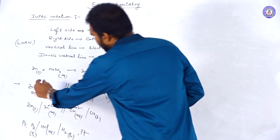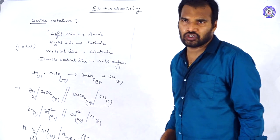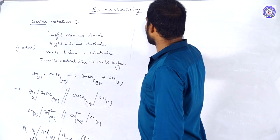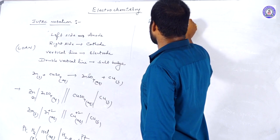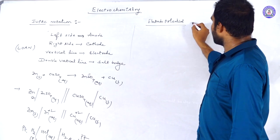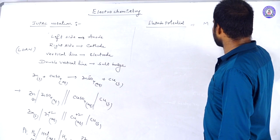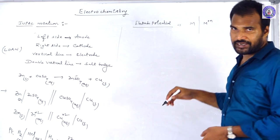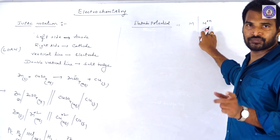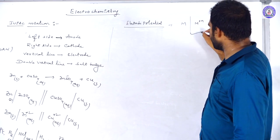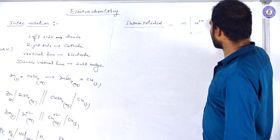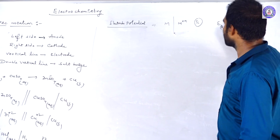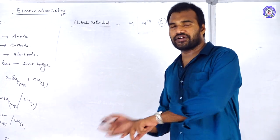Whenever a metal is in contact with its metallic aqueous solution — represented by a single vertical line — a potential is generated. That potential we call electrode potential. The electrode potential is represented as E, and the reaction can be either an oxidation reaction or a reduction reaction.